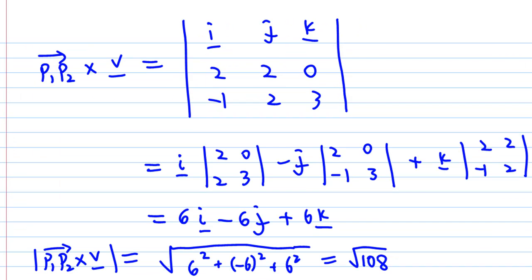So after expanding out the 3 by 3 determinant, I get i times (2·3 - 0·2) minus j times (2·3 - 0·(-1)) plus k times (2·2 - 2·(-1)). And this will give me 6i minus 6j plus 6k.